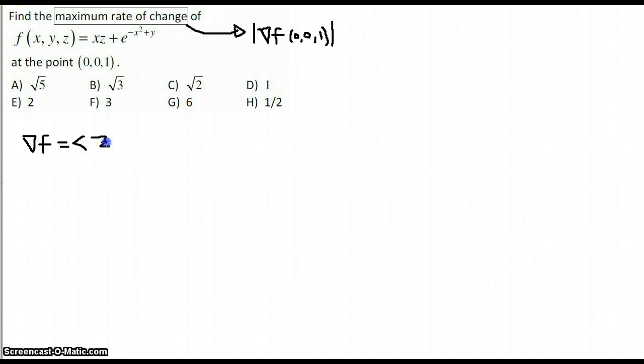Starts off first term with a z as its derivative with respect to x. E to the negative x squared plus y, and then the chain rule derivative of the exponent with respect to x is negative 2x. That's the first component of the gradient, the partial derivative with respect to x.